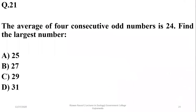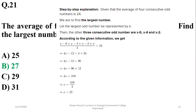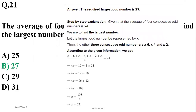Question 20: The average of four consecutive odd numbers is 24. Find the largest number. The answer is 27. Solving step by step with the arithmetic formula for consecutive odd numbers, the largest number is 27.